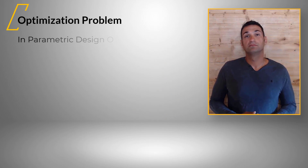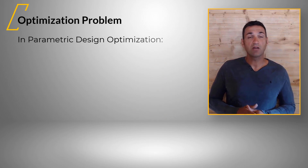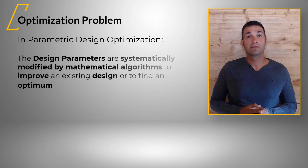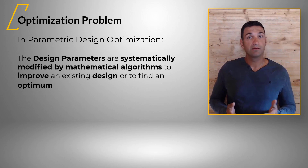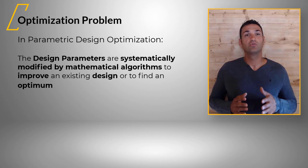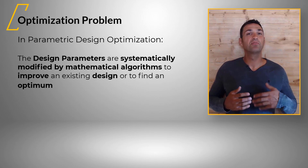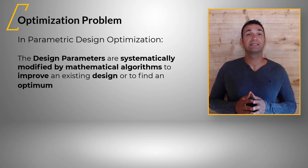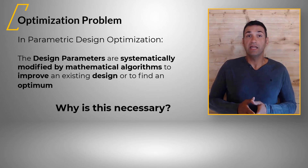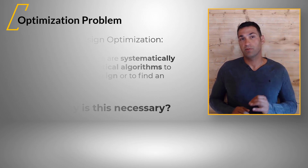In parametric design optimization, the design parameters are systematically modified by mathematical algorithms to get an improvement of an existing design or to find a global optimum. Why is it necessary? Here is an analogy to better understand this problem.